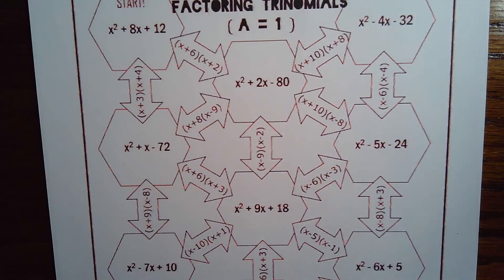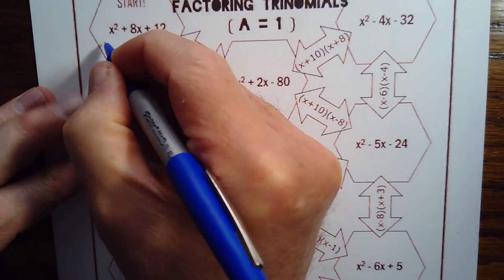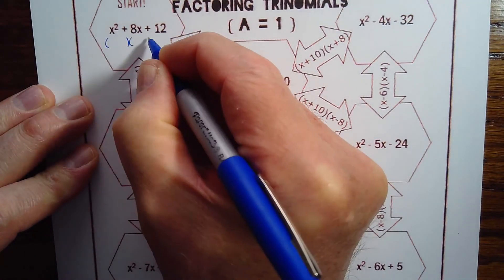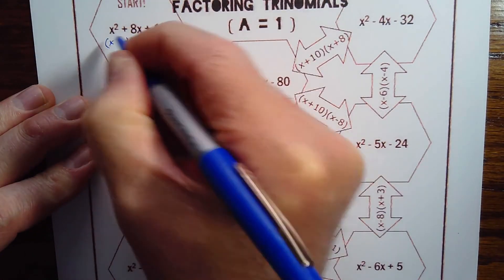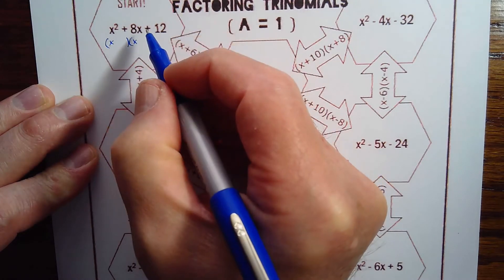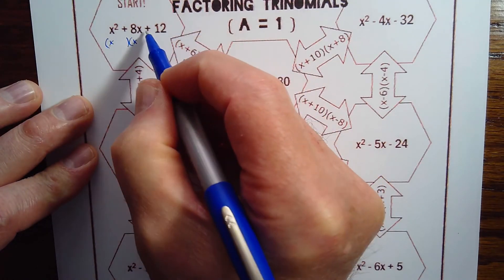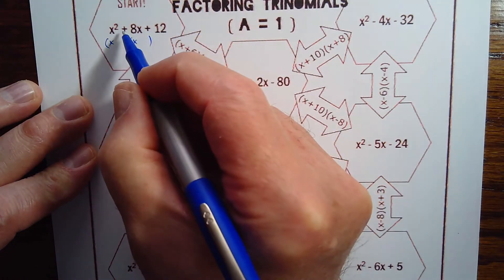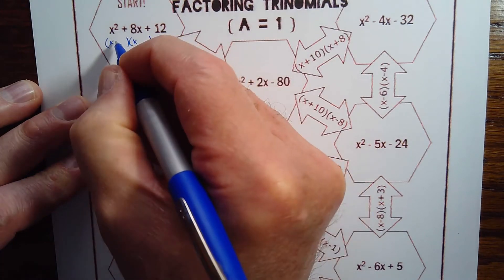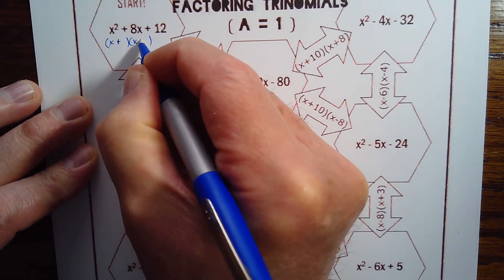Alright, here we go. So I'm going to put these two sets of parentheses, put my x at the beginning. I look at the last term, it's positive, and then I look at the middle term, that's positive. That tells me they're both going to be plus signs in here.